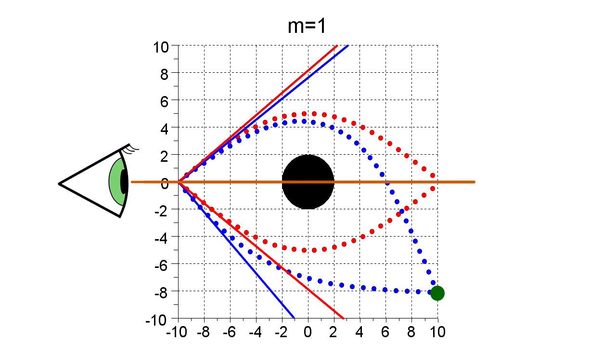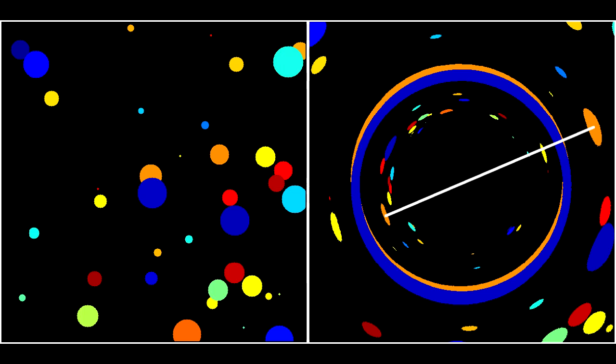One blue line is between the red lines, and the other is outside. Thus, we will see two images of every object, one outside the ring and another on the opposite side of the sky, inside the ring.